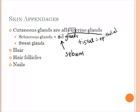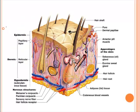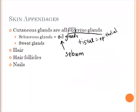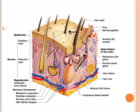Sebaceous glands are found in the dermal layer, not the epidermal layer. Even though the dermal layer is connective tissue, the sebaceous glands themselves are actually epithelial tissue. The same is true for the sweat glands. Sweat glands are also exocrine glands found in the dermal layer, but they too are formed by epithelial tissue.